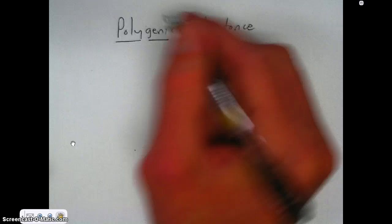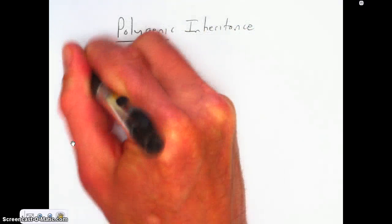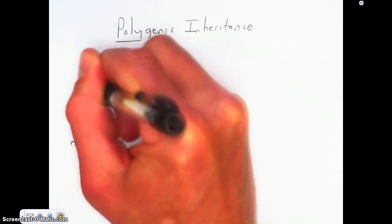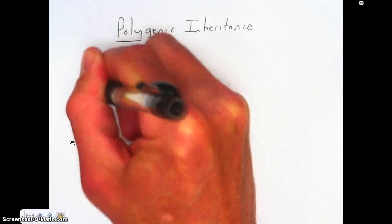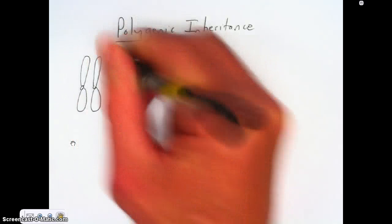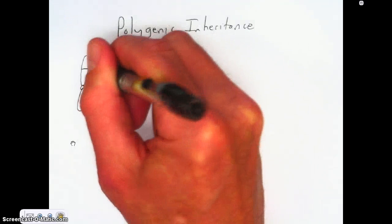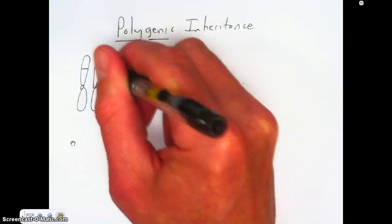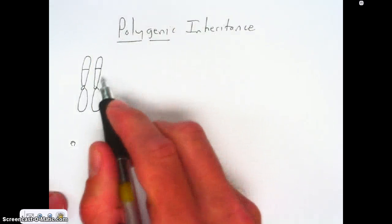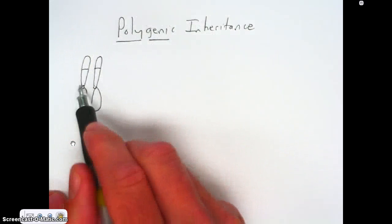When we did Mendel and Genetics, if you'll recall, when we talked about pea plants, the gene for pea plant height was controlled by one gene location. So I drew some fictitious chromosomes here, one from the mother, one from the father.